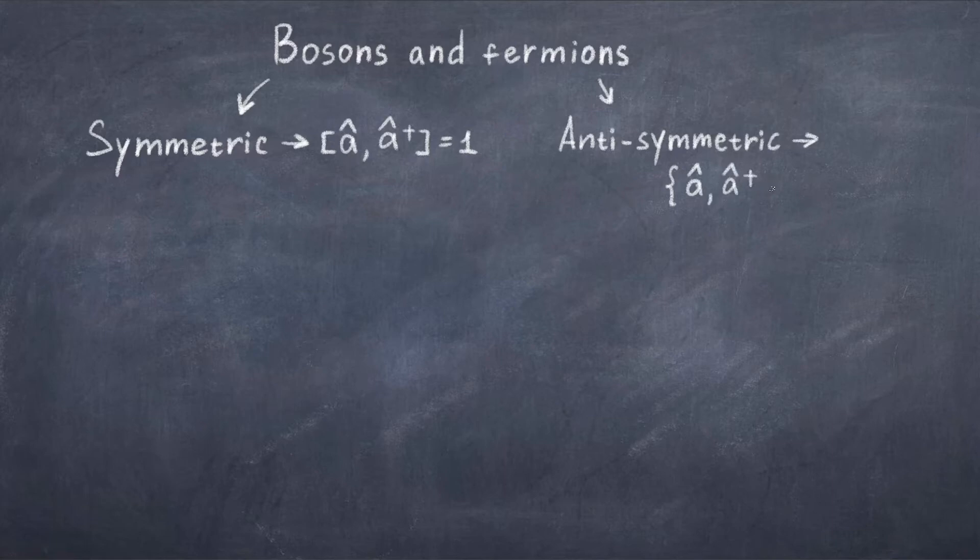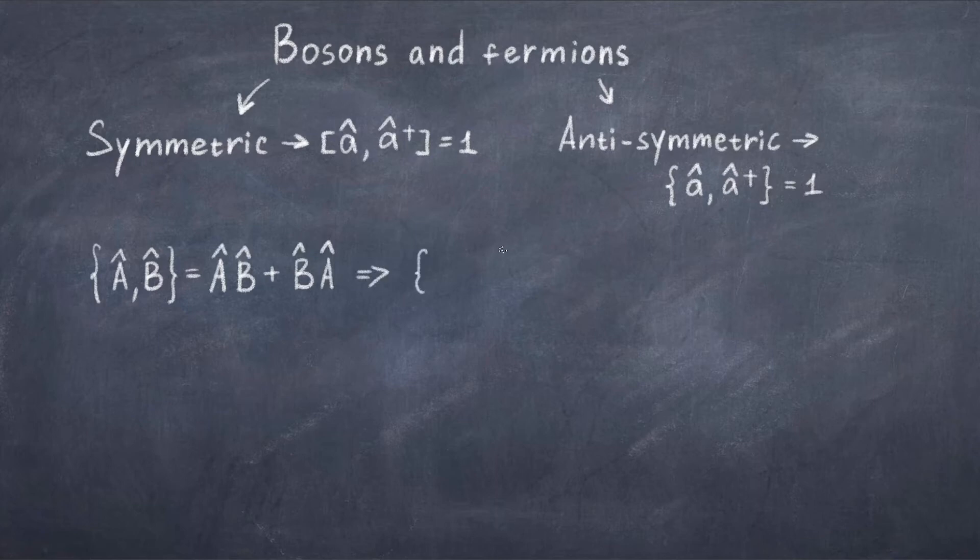Now we can do something similar for fermions. A fermion is for example an electron. Because fermions are anti-symmetric, they must be defined in terms of the anti-commutator. We have {a hat, a hat dagger} in these anti-commutation brackets, and that is equal to 1. And this anti-commutator is defined similar to the commutator but with a plus sign. And so we have that anti-commutation relation between a and b is ab plus ba.